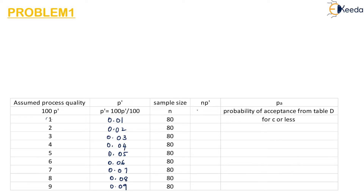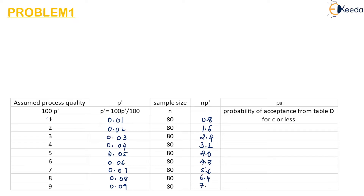Now we have to calculate the np' value — that is the multiplication of n and P'. So for the first one, 80 into 0.01 we get 0.8. Same way, 80 into 0.02 gives 1.6, then 2.4, then 3.2. Multiplication of 0.05 into 80 gives 4.0, then 0.06 into 80 is 4.8, then 5.6, 6.4 and the last one is 7.2.